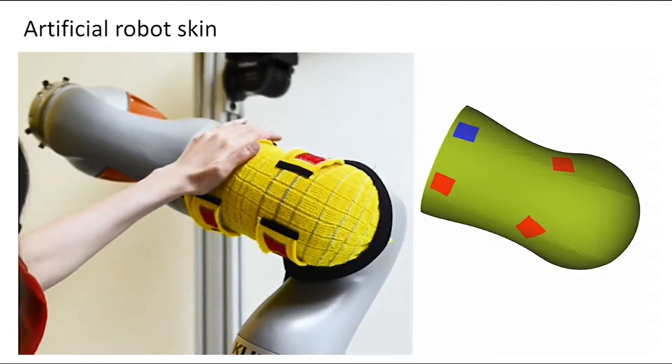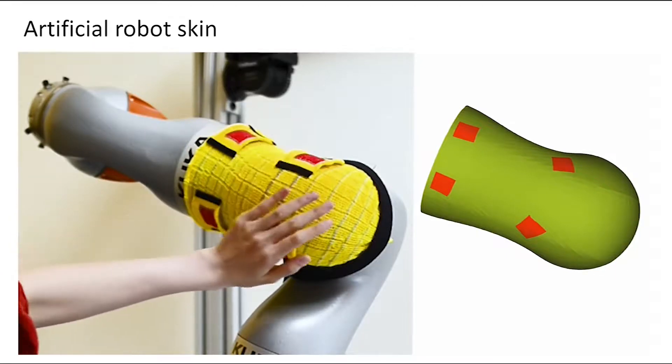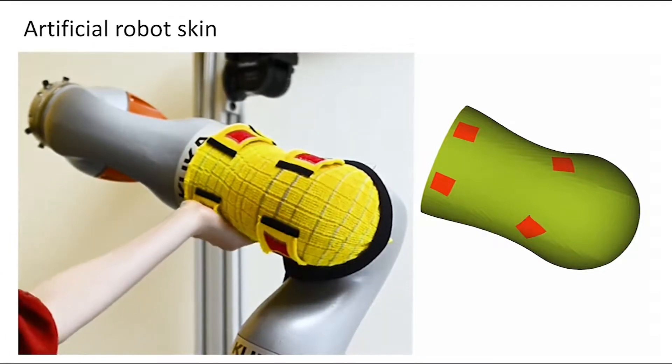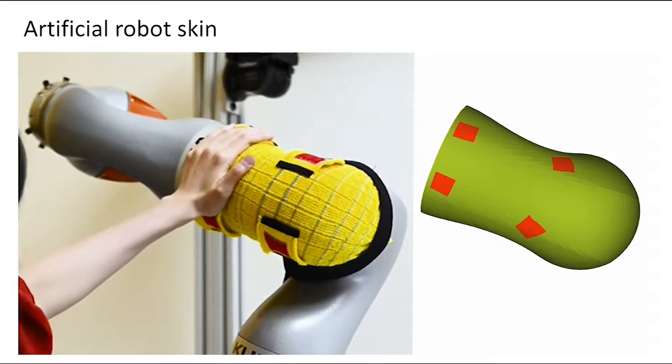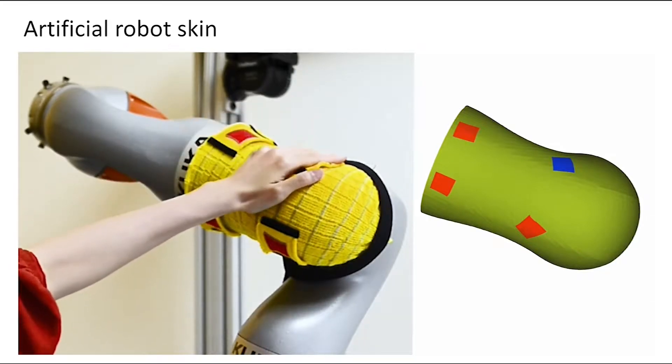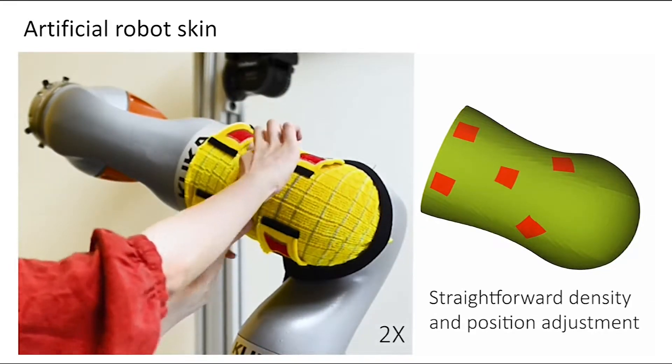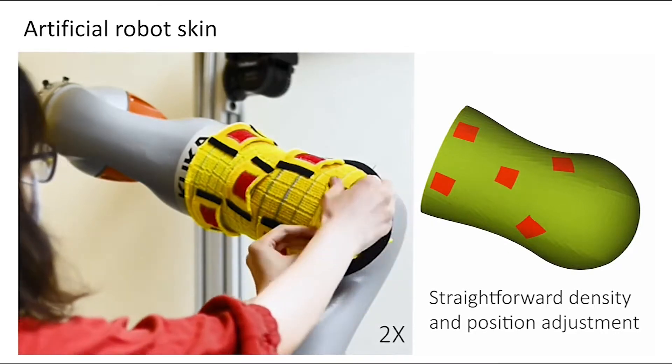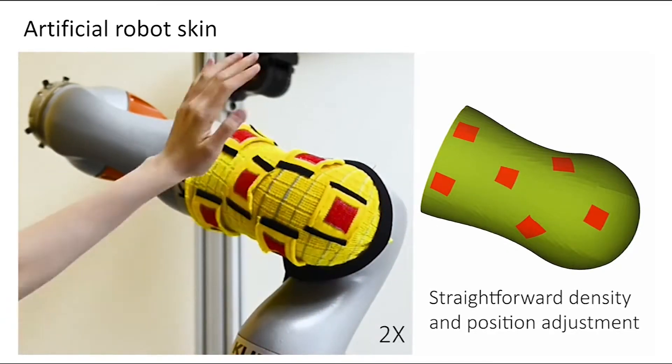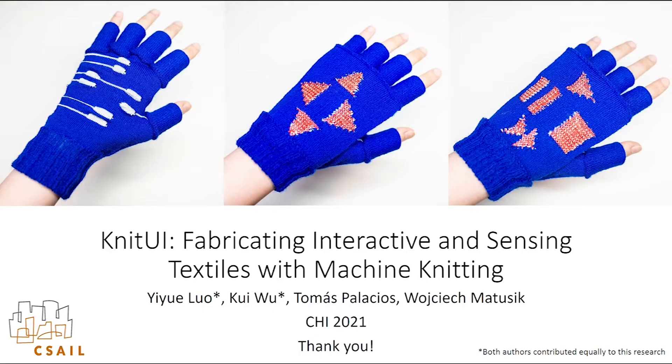We integrate the sensing units with a fully conformal robotic arm sleeve, which can be applied as electronic skin in human-robot interactions. We can also easily adjust the density and positions of the sensing units. Details can be found in our paper.